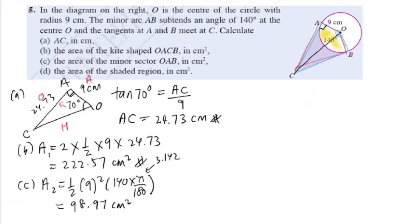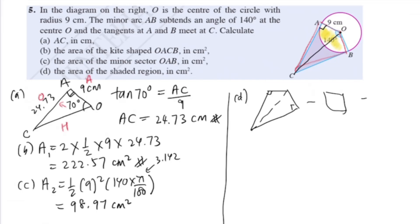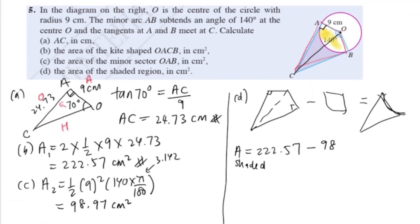Part D: find the area of the shaded region. Take the kite area and subtract the sector area. Area of kite is 222.57 minus area of sector 98.97 gives 123.60 cm squared. The textbook gives 123.59 — the small difference is due to earlier rounding of 98.97 versus 98.98.